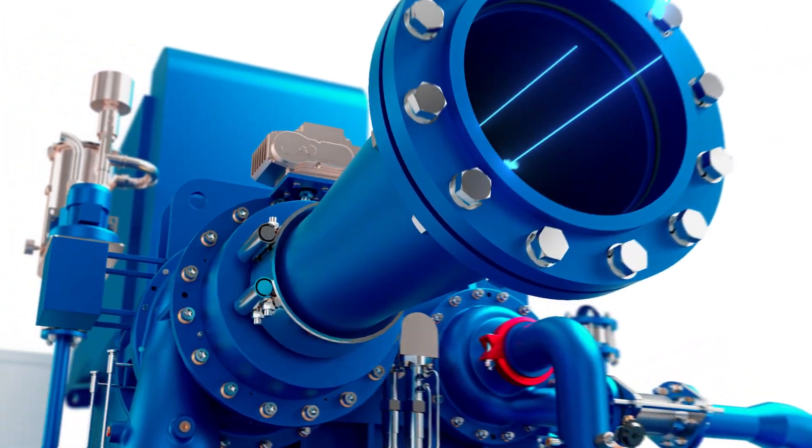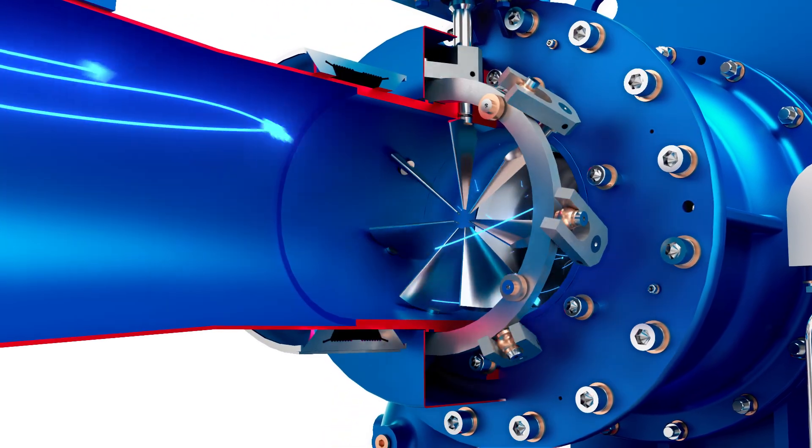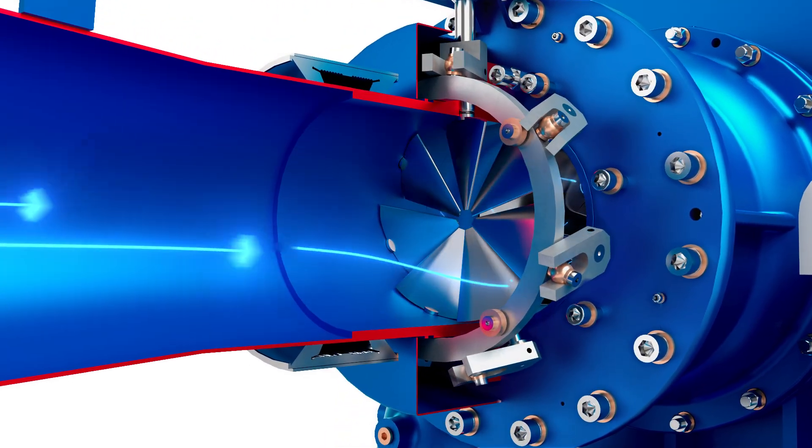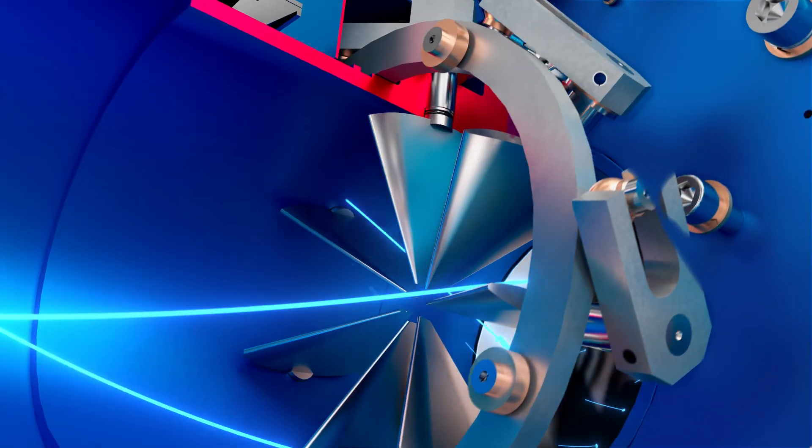The KCOF's inlet guide vanes pre-swirl the air, allowing for efficient entry into the impeller and enabling operators to throttle airflow as needed to maintain steady pressure and optimal air supply.